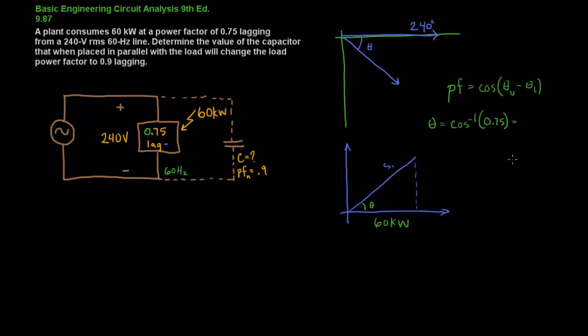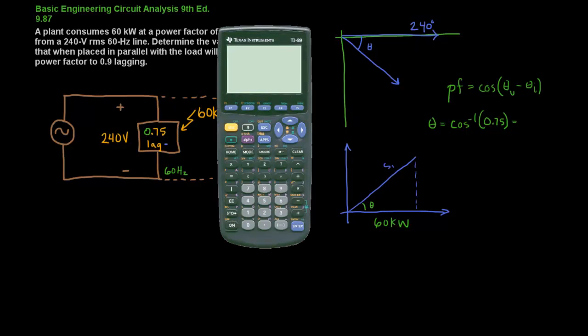And that angle is the inverse cosine. That's the green button here. Inverse cosine of 0.75, which is 41.41 degrees.